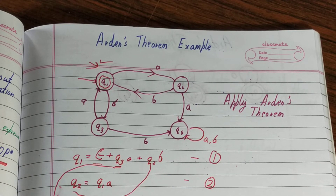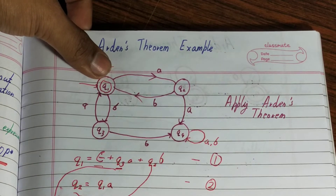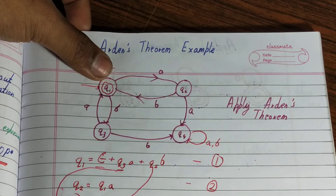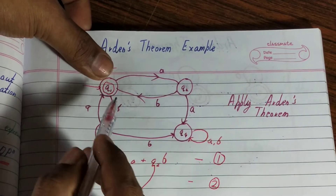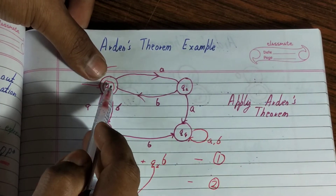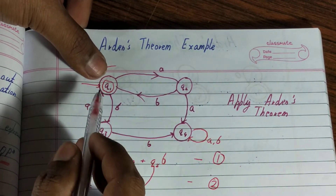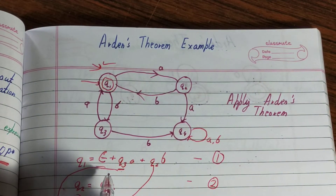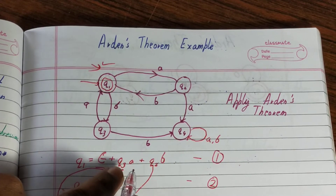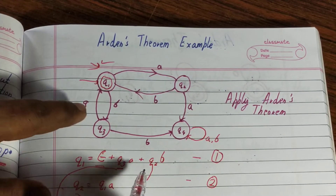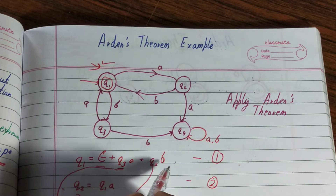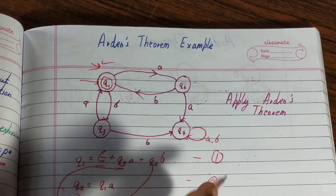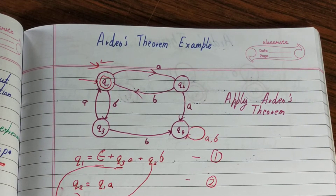One more thing to keep in mind: whichever state is your initial state, you add null (ε) to it. Now let's calculate for every state. In the first step, we just need to note down all the incoming edges towards each particular state. For q1, the incoming edges are q2b and q3a, and since q1 is the initial state, we add null. This is equation one.